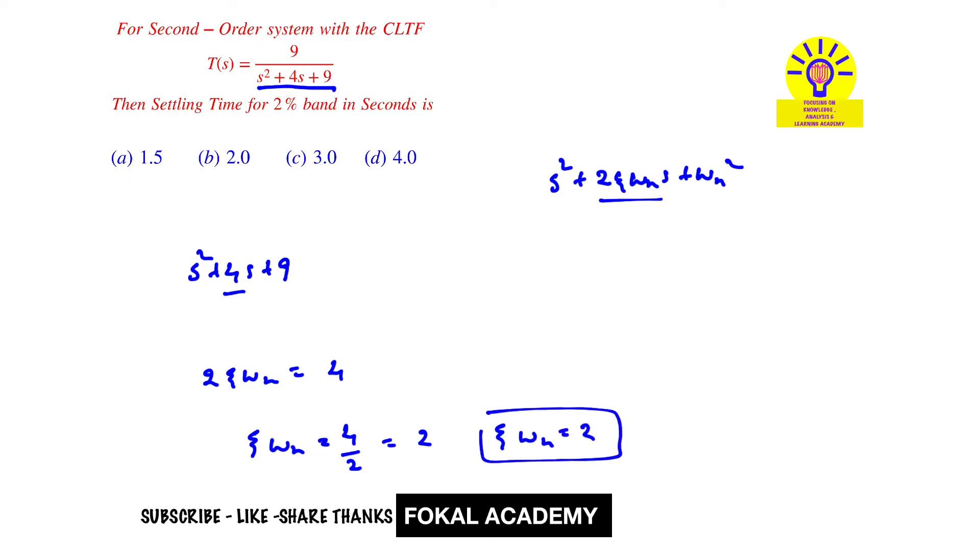But here we want settling time for 2% error or 2% band. It is nothing but Tₛ = 4/(ζωₙ) for 2% error.